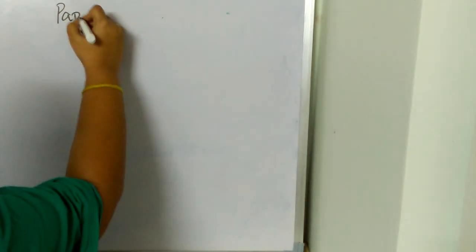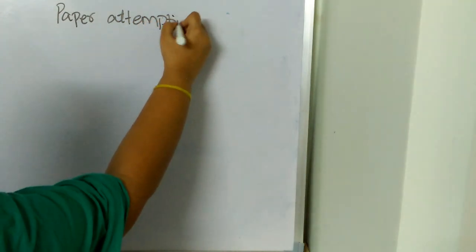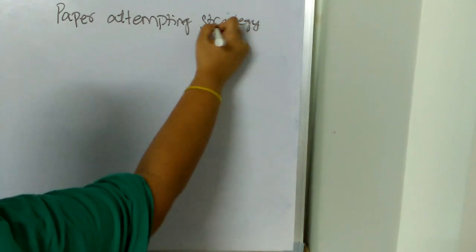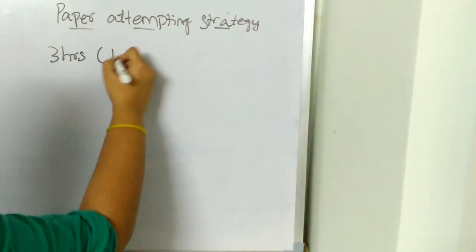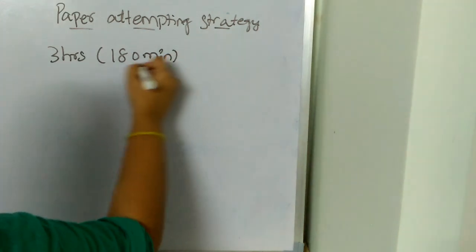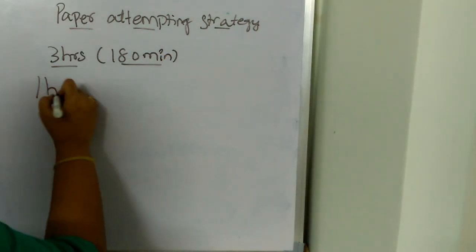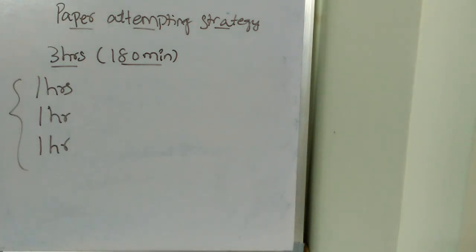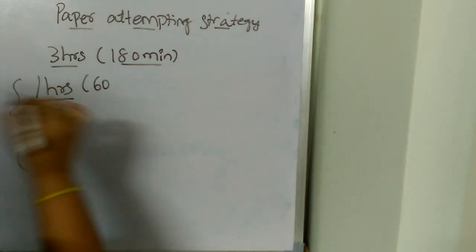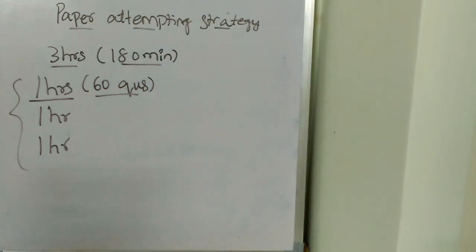Now let's see the paper attempting strategy. The exam duration is three hours, which is 180 minutes. Divide it into three equal parts of one hour each. In the first hour, target to attempt 60 questions. Concentrate on easy and direct questions — questions where, once you read them, you directly know the answer.